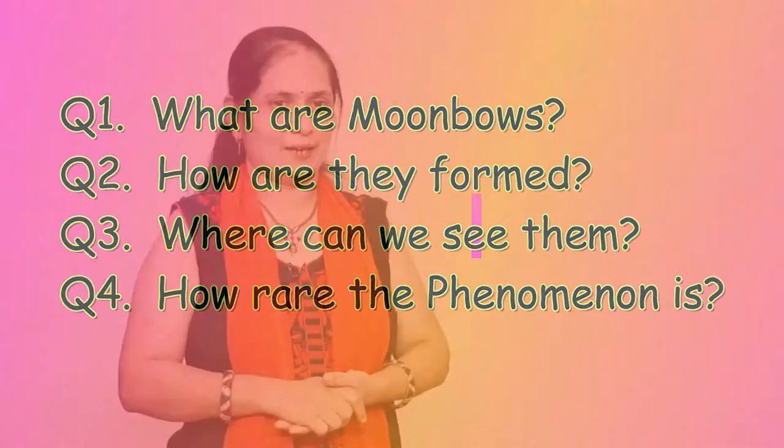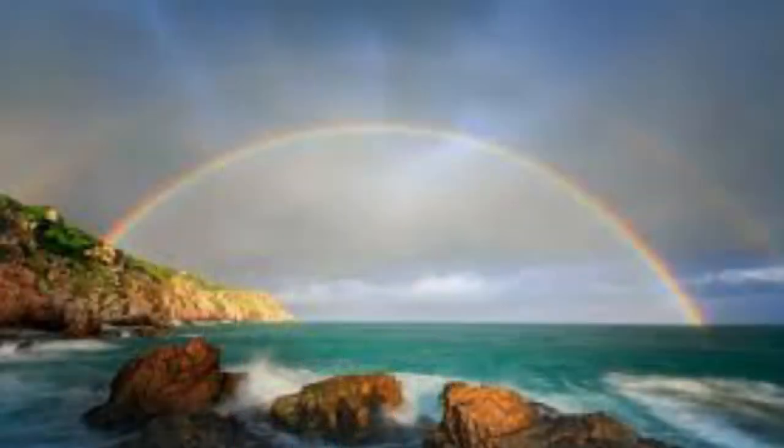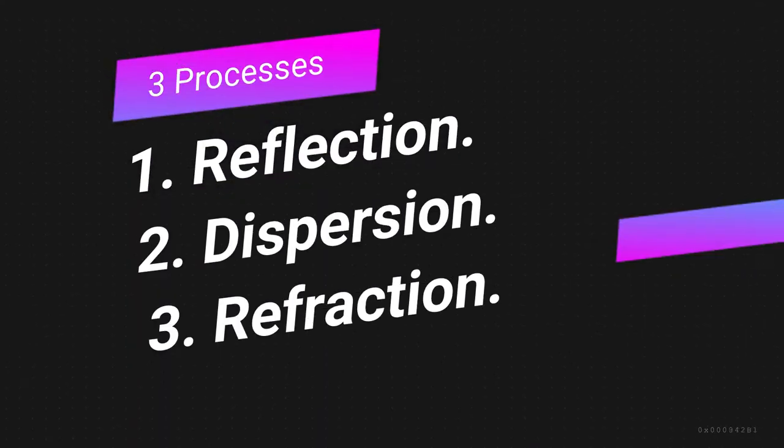How rare is the phenomenon? Watch the video till the end to get the answers. Please do hit the like and subscribe button for more such videos. Before diving into the answer, let's take a quick recap on what rainbows are and how they are formed. A rainbow is a beautiful multicolor arc in the sky which appears when sunlight hits water droplets. The rainbow is an optical phenomenon which involves three processes: reflection, dispersion, and refraction.